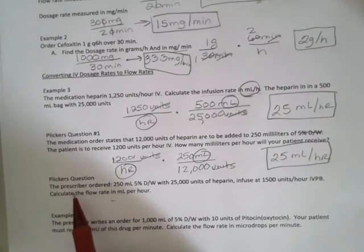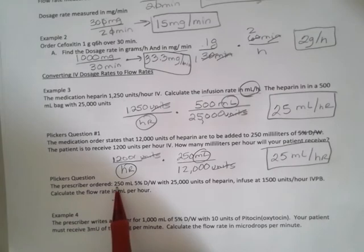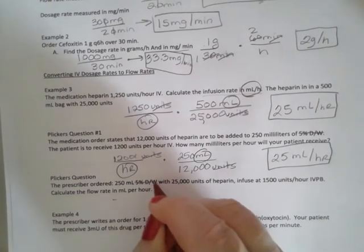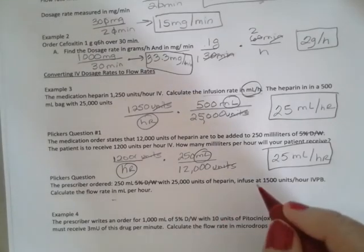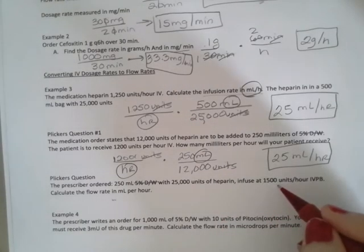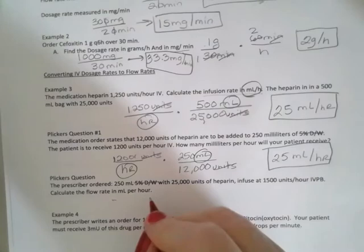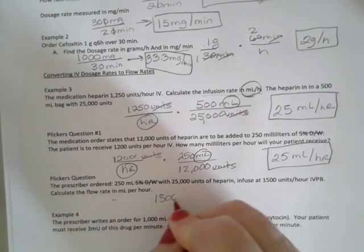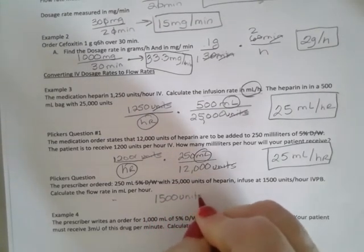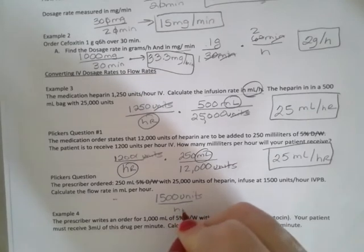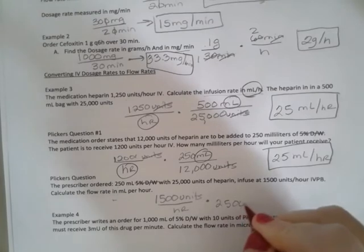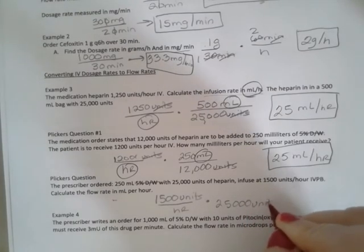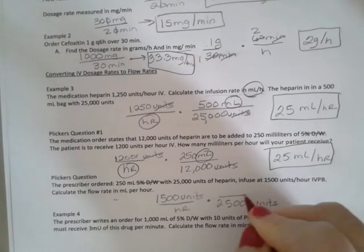So here, the prescriber ordered 250 mLs 5% D5W, which we don't care right now, 250 mLs with 25,000 units of heparin infused at 1,500 units per hour. So our 25,000 units are in 250 mLs.